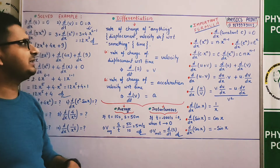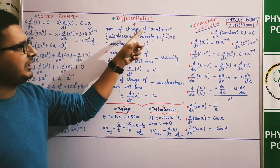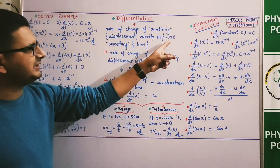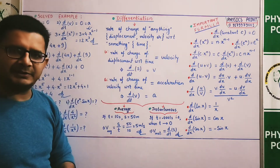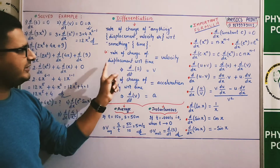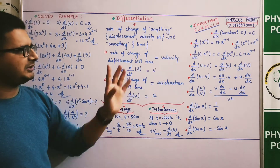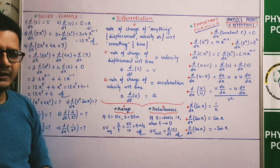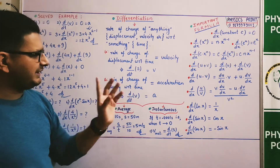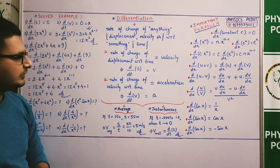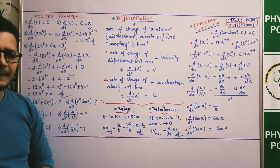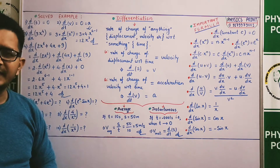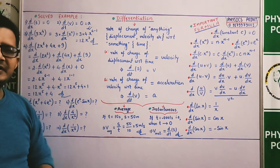तो differentiation क्या करता है? Differentiation rate of change करता है। Definition क्या होगी: rate of change of anything — जैसे displacement, velocity — with respect to something, means time के respect में। अगर rate of change of displacement with respect to time की बात करें तो velocity मिलती है (ds/dt)। अगर rate of change of velocity with respect to time define करें तो acceleration मिलता है (dv/dt)। Definition of differentiation clear है?